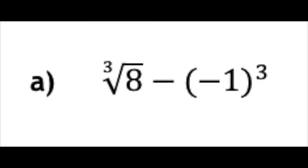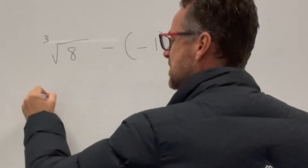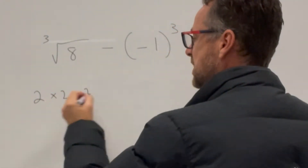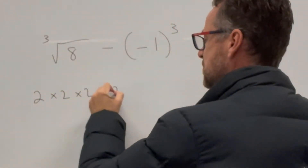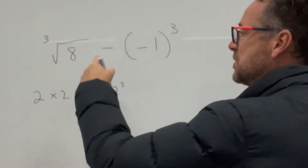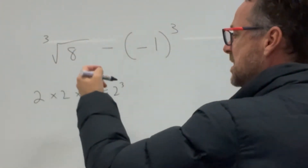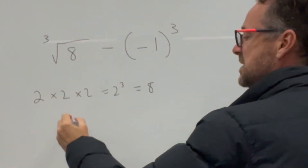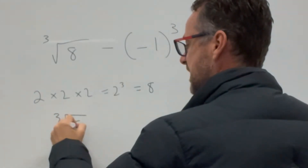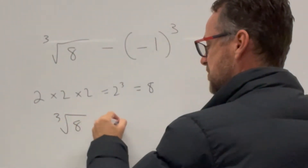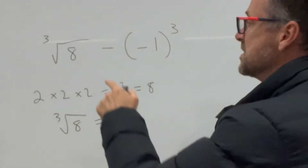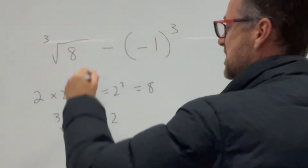Here we have the cube root of 8. It's 2 × 2 × 2, which equals 2 cubed. So 2 cubed equals 8, and therefore the cube root of 8 equals 2. So that part of this expression equals 2.